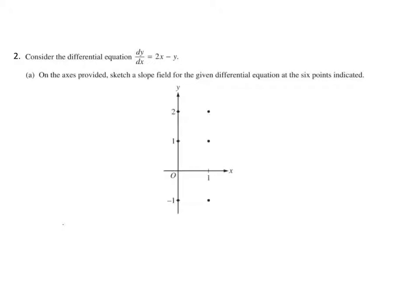For our next problem, we are sketching a slope field. Again, it's a good idea to do a chart — this chart will not count toward any points, but it sure does help you keep all of your values separated. We have our dy/dx. Starting at (0, negative 1): when I substitute that in, I get positive 1, so that's going to be tilted upward with a positive slope.